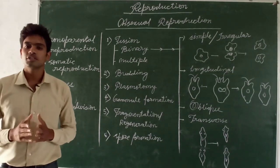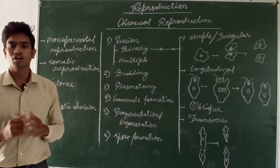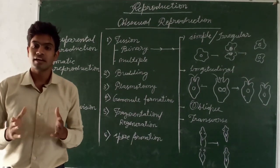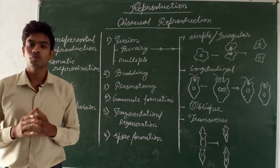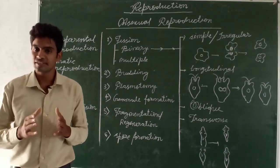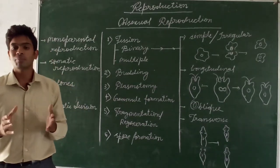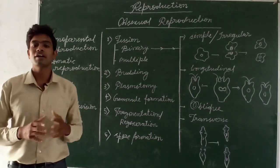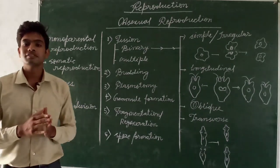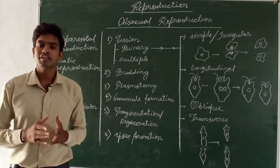Welcome to all of you. In this video we will talk about reproduction. Reproduction is defined as a biological process through which an organism gives rise to young ones similar to itself. On the basis of mode, reproduction has been divided into three major categories: asexual reproduction, vegetative reproduction, and sexual reproduction.